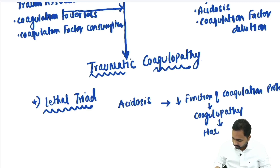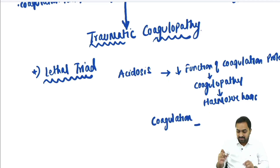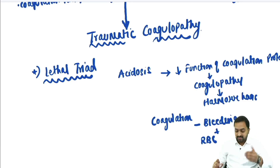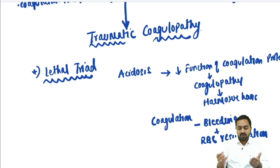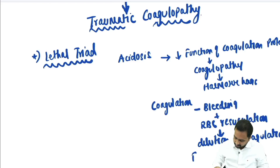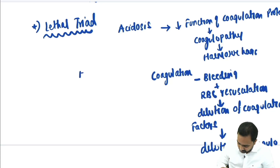This coagulopathy causes further hemorrhage. If the patient is bleeding and we give RBC resuscitation — giving blood products without control of bleeding — there is going to be dilution of coagulation factors, causing dilutional coagulopathy.